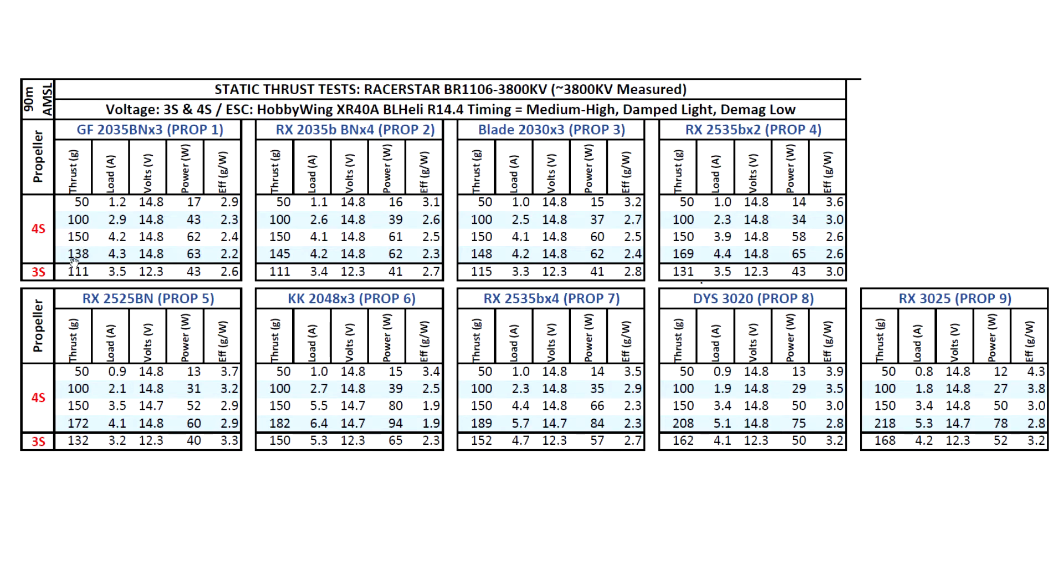So as you can see, this motor doesn't perform extraordinarily. Compared to the other motors I've tested, the 1106 5000, 6000, and 8000 kV motors and even some 1105s, they're doing a higher thrust than this. So this one, actually, the only props that seem to work well on 4S are the 3 inch props. On 3S, even the 3 inch props are kind of on the low side. So this motor is probably best for a very light build, something that you're just going to be cruising around.